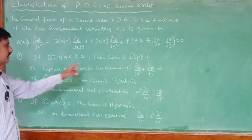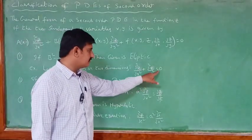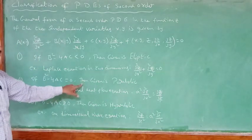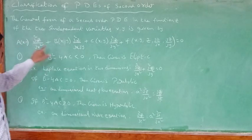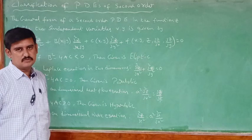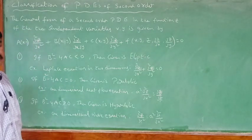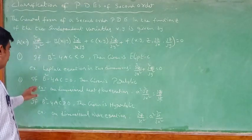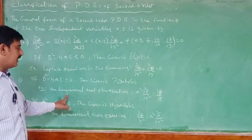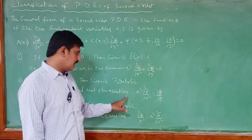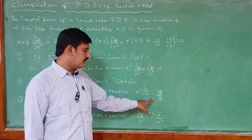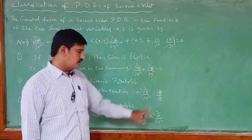The second case: if b² − 4ac is equal to 0, then the given equation is called a parabolic equation. The example is the one-dimensional heat flow equation: a² ∂²z/∂x² = ∂z/∂t.